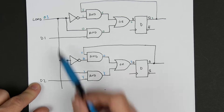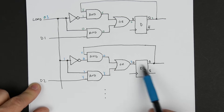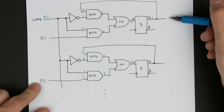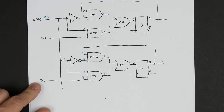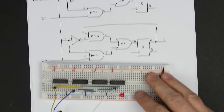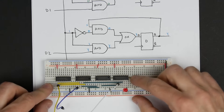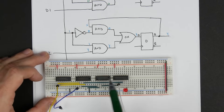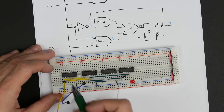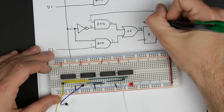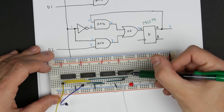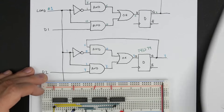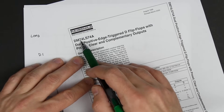So we can go ahead and build this circuit. I've used four chips here. This is a 74LS74, which basically has two D flip-flops built into it. This is the datasheet for the 74LS74 — you can see it has two D flip-flops. We're using the one with pins on the bottom. It has the D input, a clock input, the Q output, and an inverted Q output.